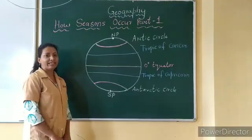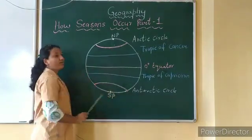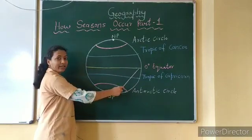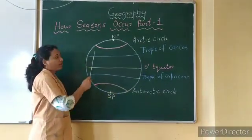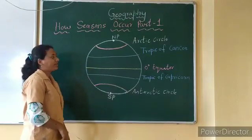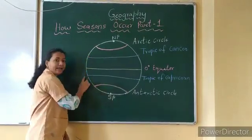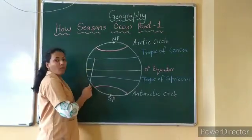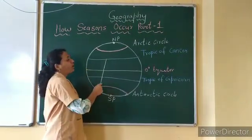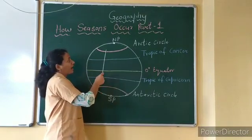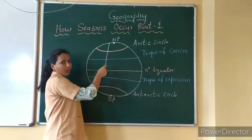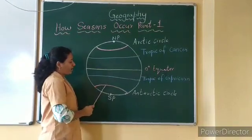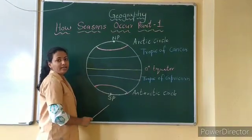Let's see the important latitudes on the earth. The middle line is called the equator. The equator divides the earth into two equal parts, that is, northern hemisphere and southern hemisphere. Apart from the equator, there are more important latitudes like Tropic of Cancer, Arctic Circle, and North Pole, and in the southern hemisphere, you will find Tropic of Capricorn, Antarctic Circle, and South Pole.